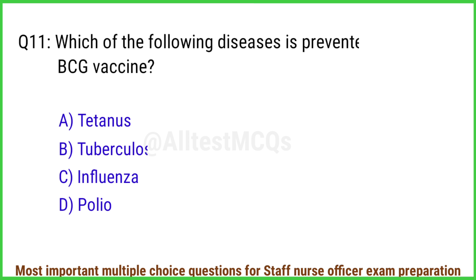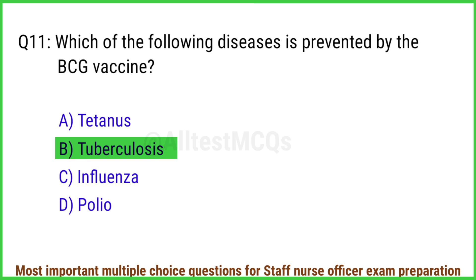Q11. Which of the following diseases is prevented by the BCG vaccine? The right answer is option B: Tuberculosis.